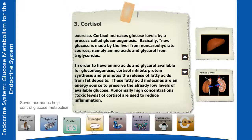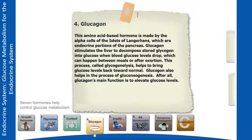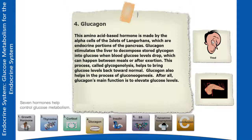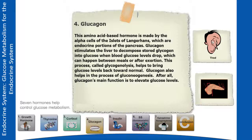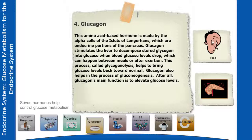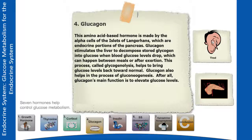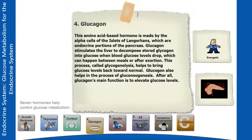Glucagon is an amino acid-based hormone made by the alpha cells of the islets of Langerhans, which are endocrine portions of the pancreas. Glucagon stimulates the liver to decompose stored glycogen into glucose when blood glucose levels drop, which can happen between meals or after exertion. This process, called glycogenolysis, helps bring glucose levels back toward normal. Glucagon also helps in the process of gluconeogenesis, as its main function is to elevate glucose levels.